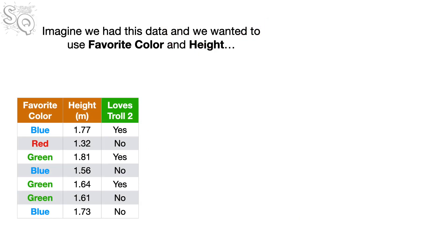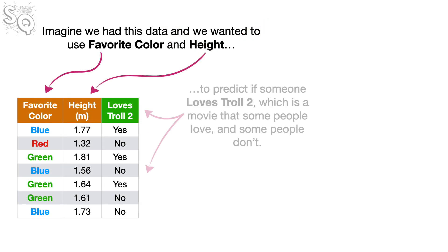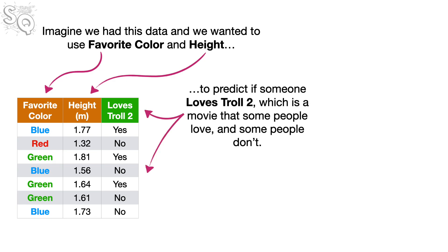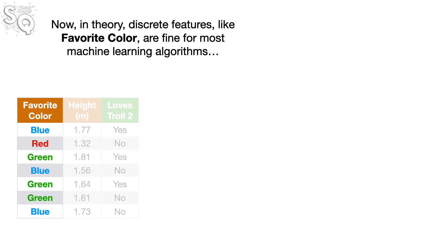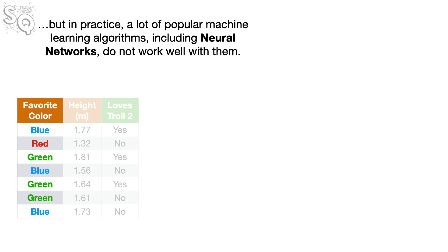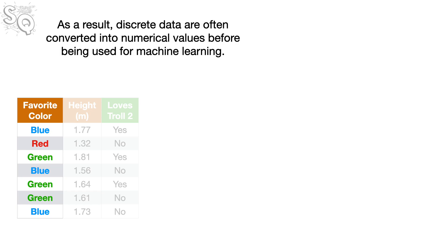Imagine we had this data and we wanted to use Favorite Color and Height to predict if someone loves Troll 2, which is a movie that some people love and some people don't. In this case, Favorite Color has three discrete values: blue, red, and green. Now, in theory, discrete features like Favorite Color are fine for most machine learning algorithms. But in practice, a lot of popular machine learning algorithms, including neural networks, do not work well with them. As a result, discrete data are often converted into numerical values before being used for machine learning.